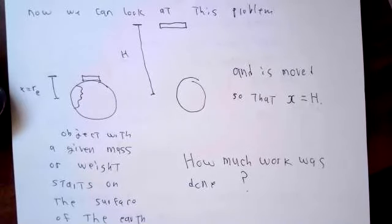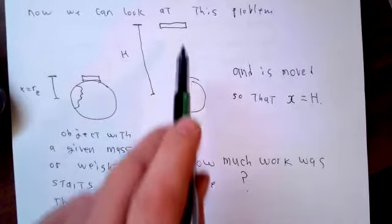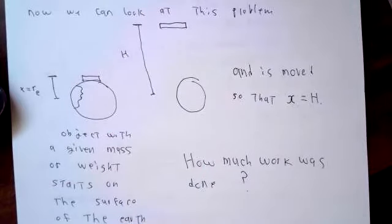Now we can look at a problem that is similar to the spring problem, except it involves gravity instead of springs. We're going to take some object with a given mass or weight, depending on how we want to describe things. It's sitting on the surface of the earth. It's r sub e units of distance from the center of the earth, which is about 4,000 miles or 6.4 million meters, whichever units you like. We're going to, one way or the other, move this object until its distance from the center of the earth is some number, capital H, and I want to figure how much work was done.